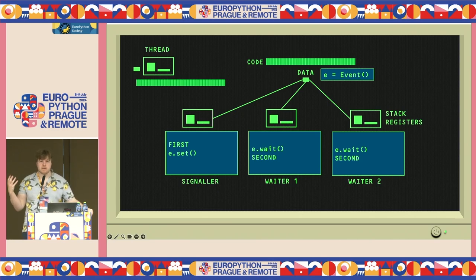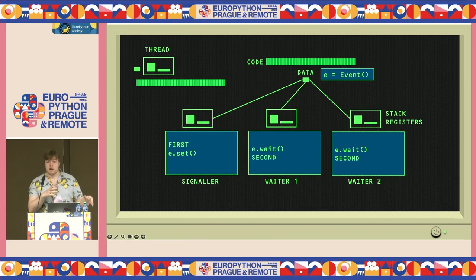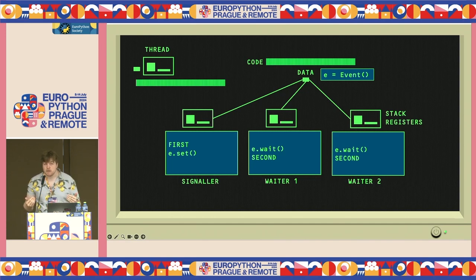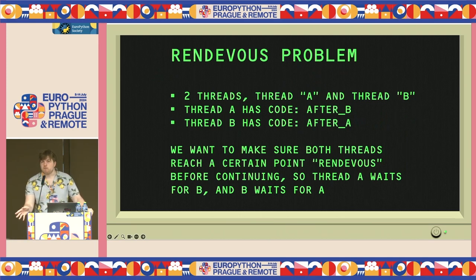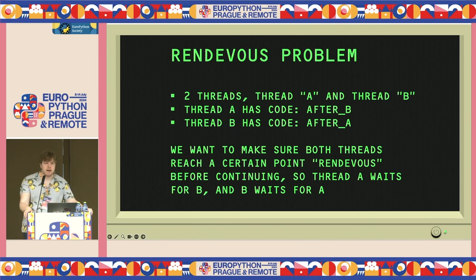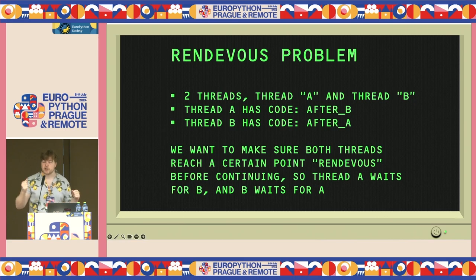With the Event, we've removed the nasty logic of having to release multiple times to handle multiple threads. We don't even need to know the thread count — as long as they all call wait() and someone signals via set(), they'll all be woken up. The order they run after that we can't guarantee; that's up to the scheduler. The guarantee is just that they've all reached that waiting point before continuing.